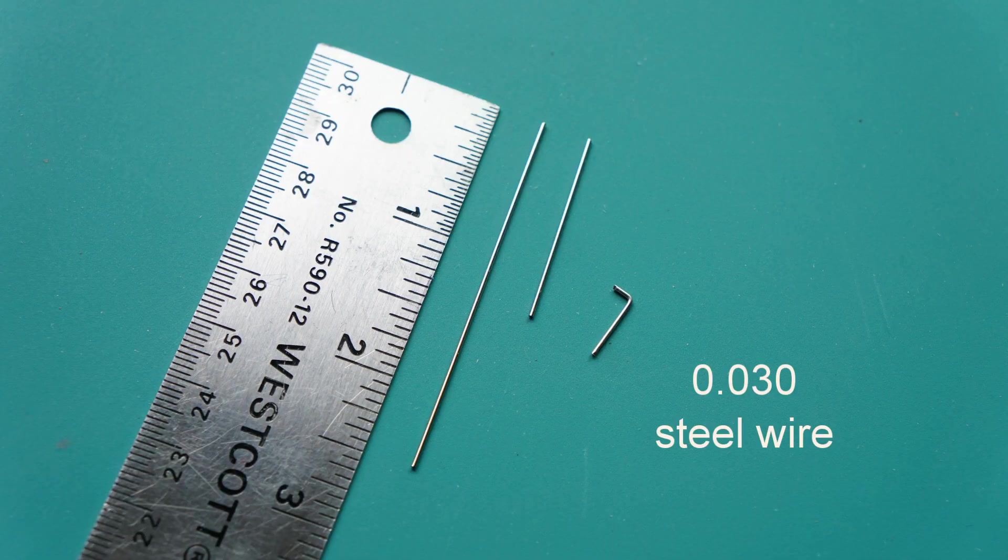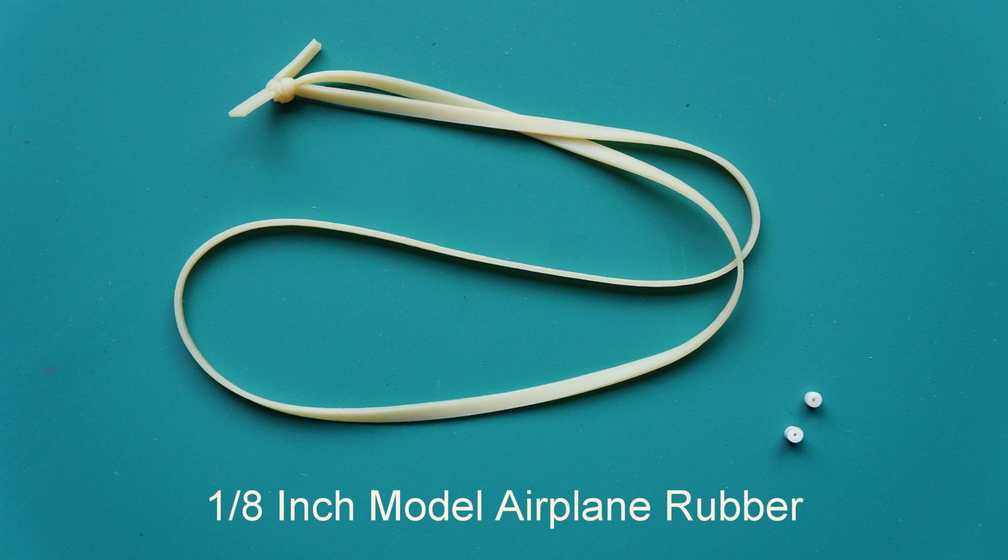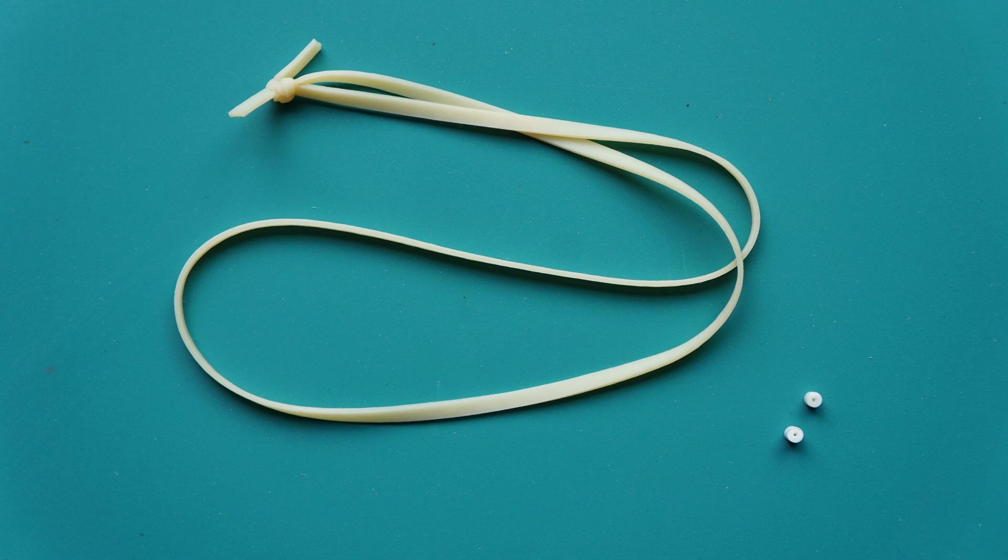You can use orthodontic wire or music wire. You'll have to buy the special type of rubber that is made for model airplanes. Don't use rubber bands you find around the house.